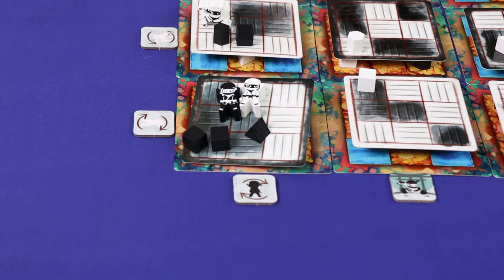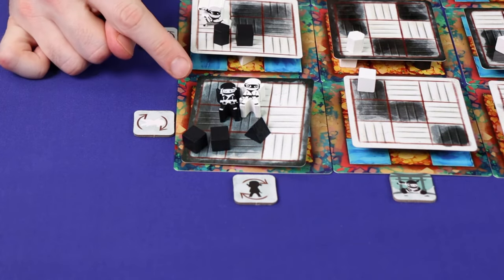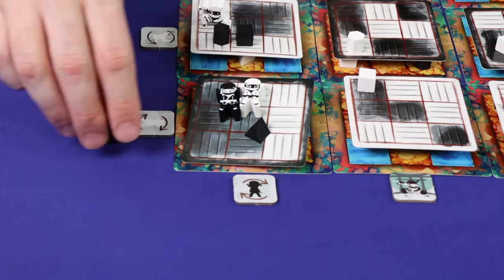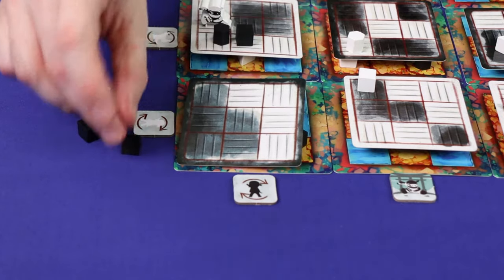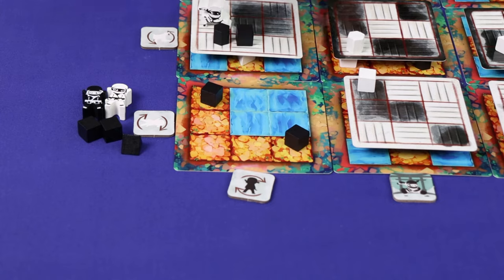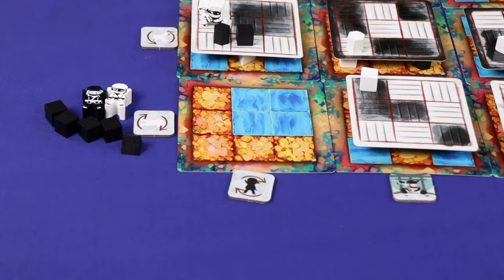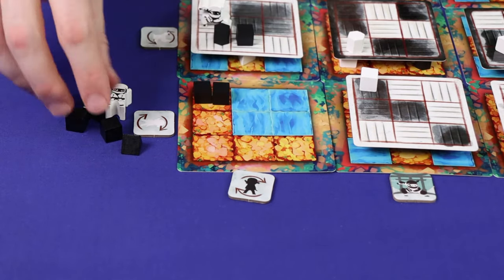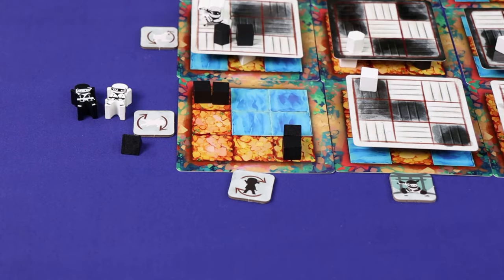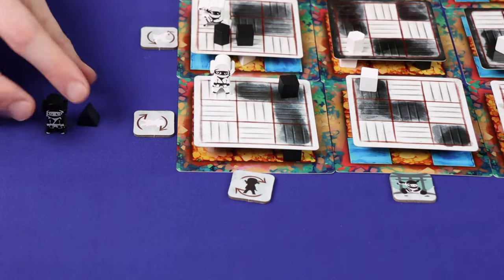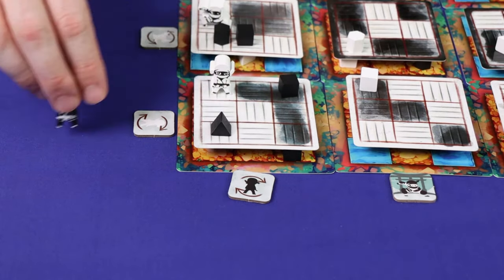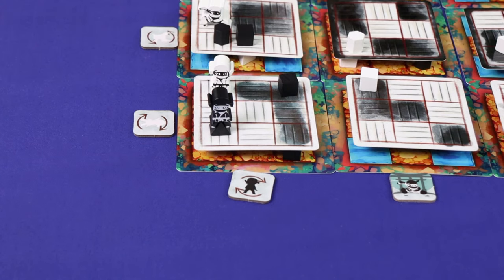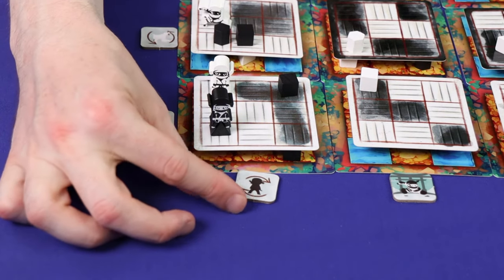The player who is next in turn order now gets to reset this terrain card, taking all of the jutsu and ninjas that were on it, as well as the floorboard piece itself, and then rearranging them into any configuration. Generally this will involve laying out the board to make it as difficult as possible for you, and as easy as possible for them. The final placement must be legal,